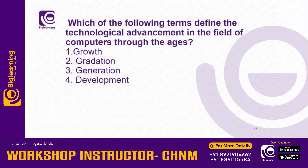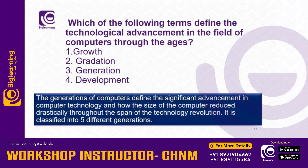Which of the following terms defines the technological advancement in the field of computers through ages? The answer is: generation. Generation is defined as the technological advancement in the field of computers through the ages.